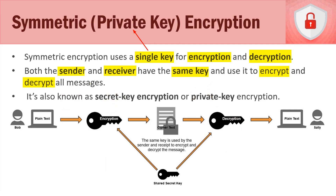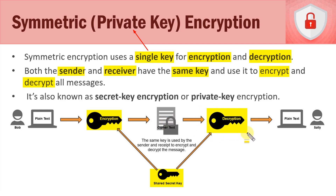Let's go through this diagram. Down here at the bottom we have the shared secret key. It's used both to encrypt a message and turn it into ciphertext, and that same key is also used to decrypt the message sent to the receiver.